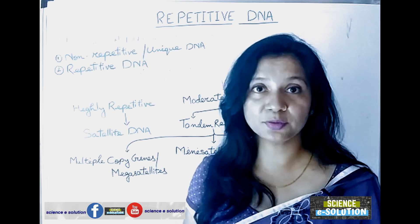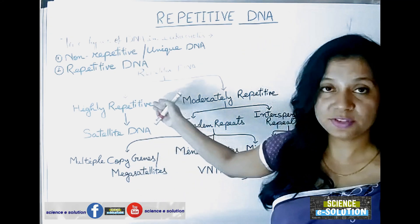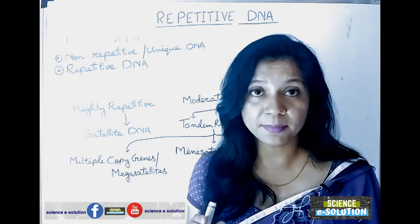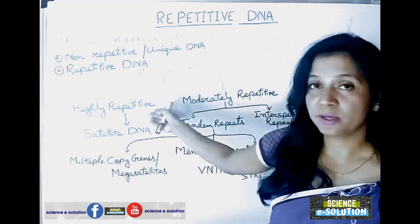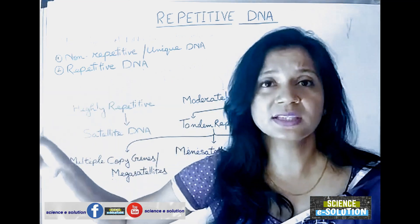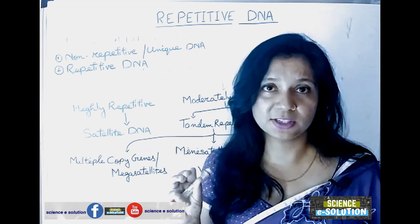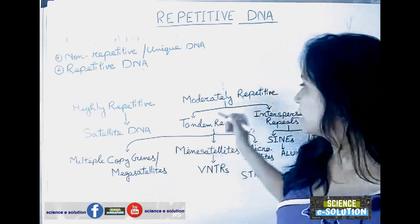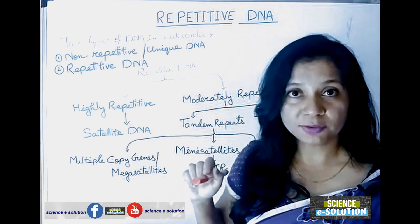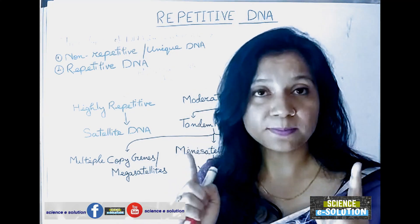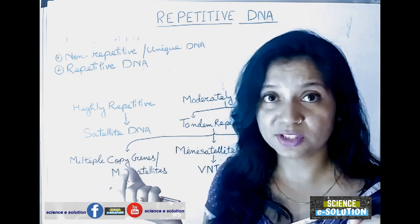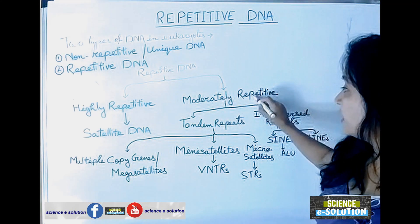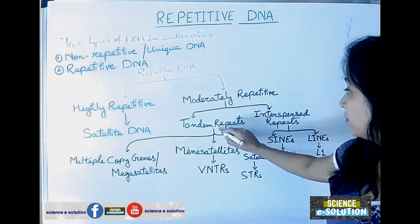The second type is moderately repetitive DNA. Moderately means it is repeated a lesser number of times than highly repetitive DNA. Moderately repetitive DNA consists of longer nucleotide sequences — five to one thousand base pairs. If these one thousand base pairs are repeated hundreds of times, it is known as moderately repetitive DNA. So it is a long nucleotide base pair sequence that repeats hundreds or thousands of times throughout the DNA.